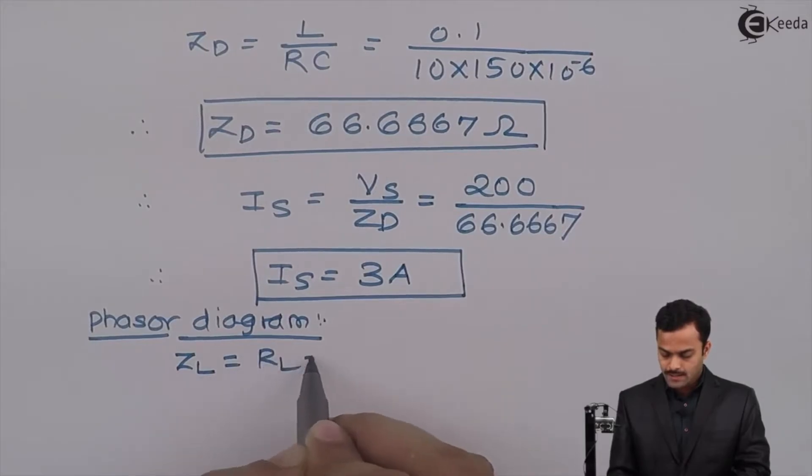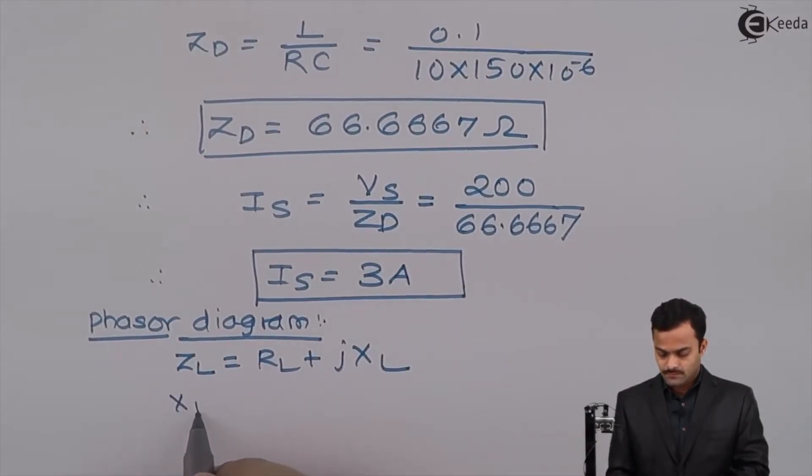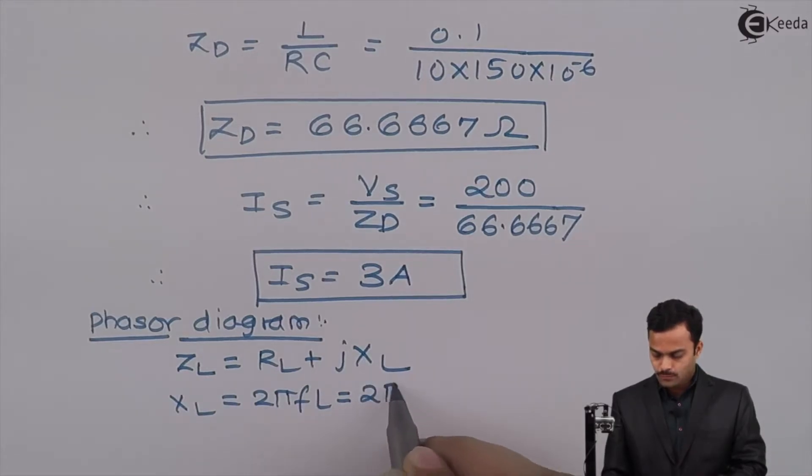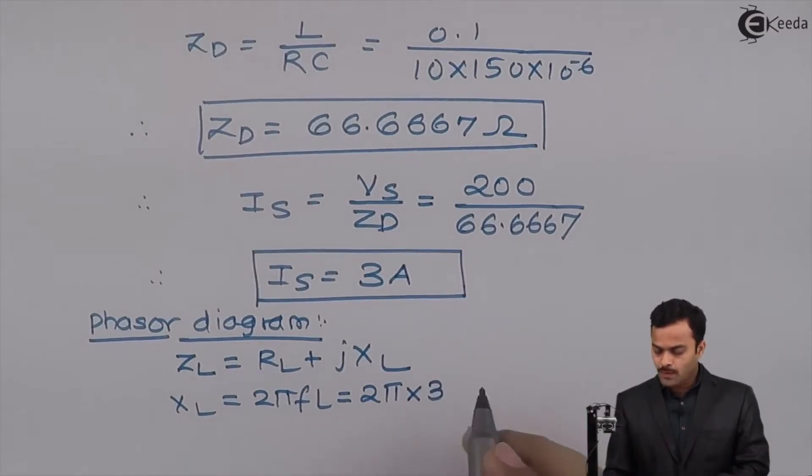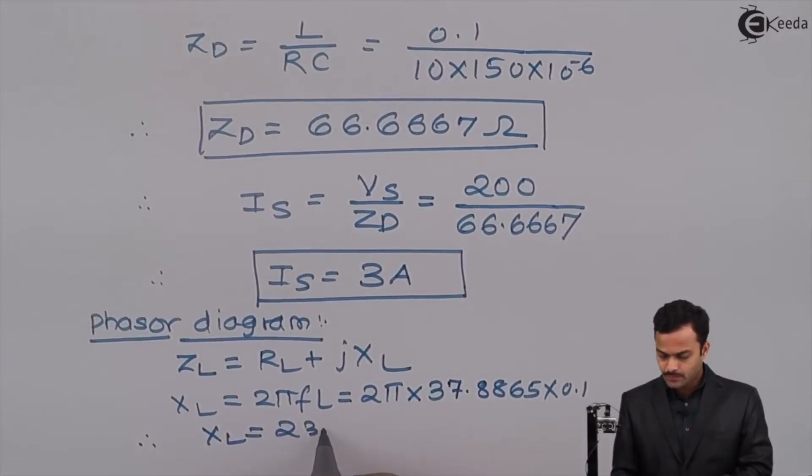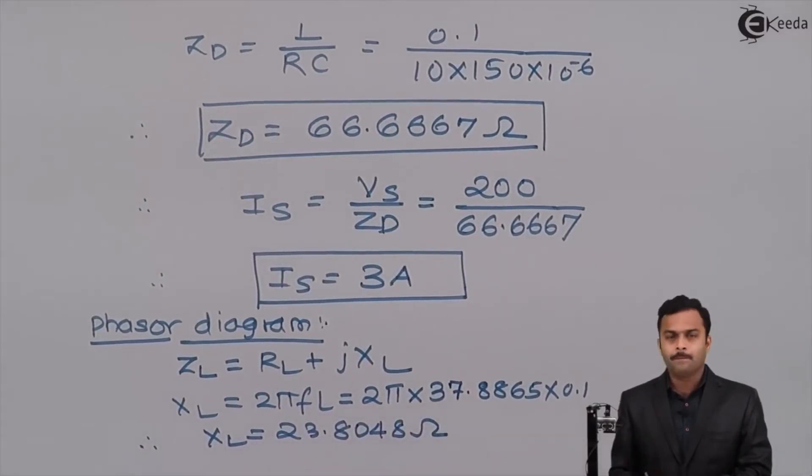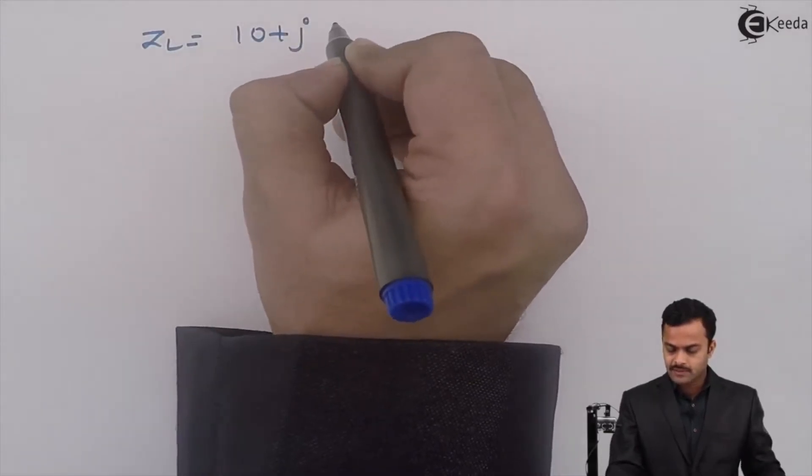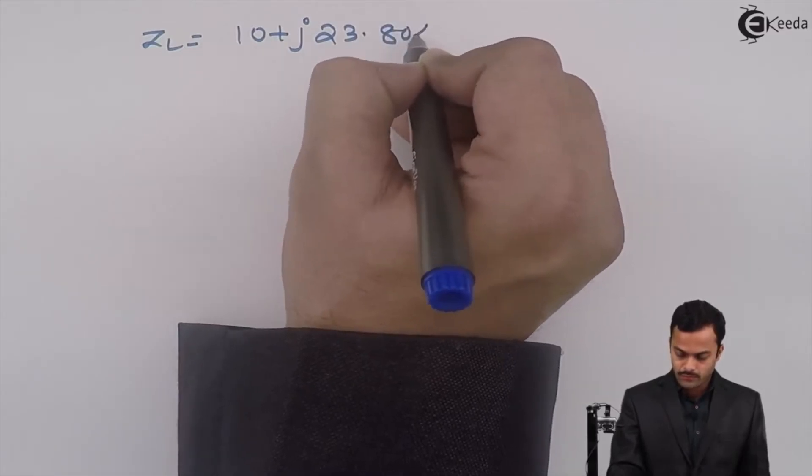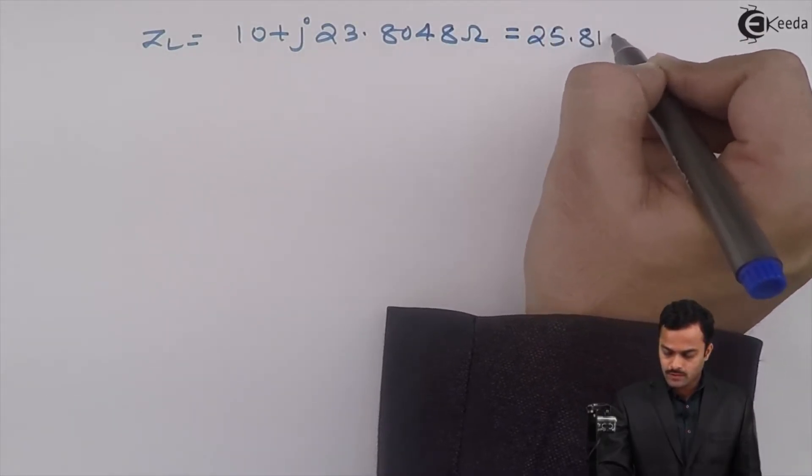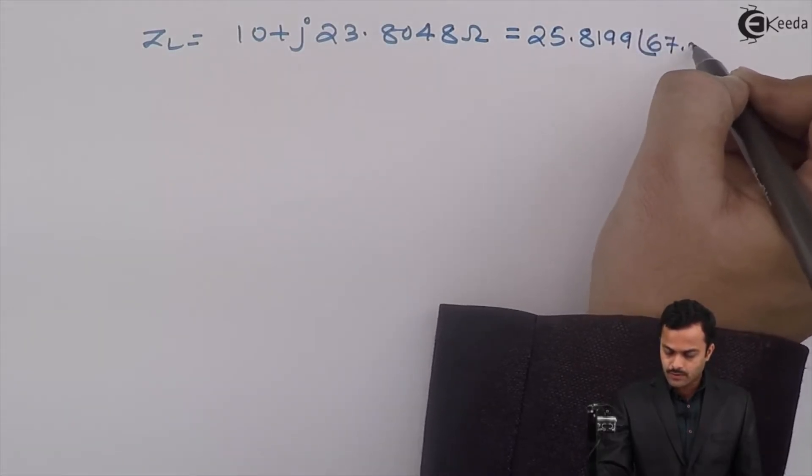So ZL equal to RL plus j XL. XL is given by 2π fL, so this is equal to 2π into frequency we have calculated as 37.8865 into L is 0.1. So I will get XL equal to 23.8048 ohm. So once I got XL I can get ZL. So ZL equal to RL is 10 plus j XL we just now calculated as 23.8048 ohm. In polar form it will be 25.8199 at an angle 67.21 degree ohm.